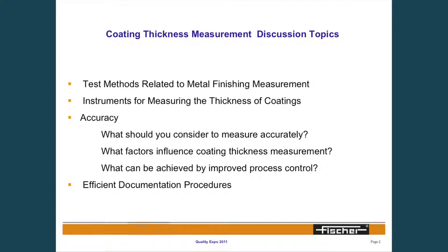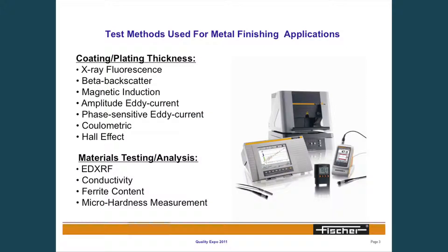There are several different test methods available to measure coating thickness. We're going to talk about those this morning, as well as some of the specific instruments that encompass those measurement technologies, and the factors that influence the results. The most common are X-ray fluorescence, beta-backscatter, magnetic induction, amplitude, eddy current phase-sensitive, coulometric, and Hall effect, as well as techniques for material testing and analysis.